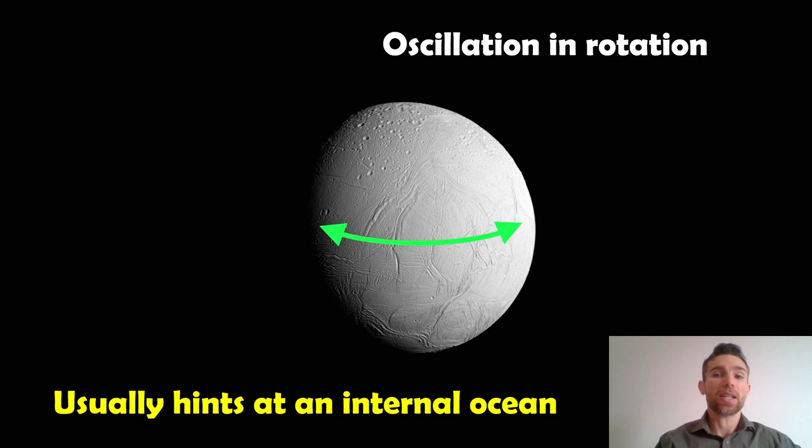Now the interesting thing here is it oscillates in rotation. So if we were looking at this moon from Saturn, it appears to rock. It rocks back and forth. It oscillates in this rotation. And normally that hints at an internal ocean. So we know that the surface is frozen. You can see the images here. We've got cracks on that. We know it's a frozen surface. What we can't directly image is the ocean. But this oscillation in rotation usually hints that it's got a global internal ocean that we can't see. Now, why is it rocking?